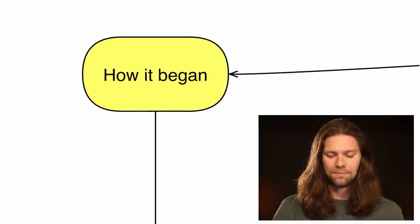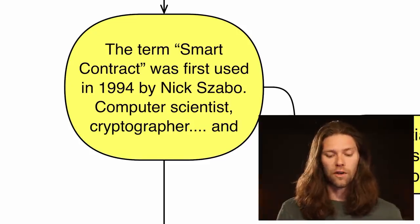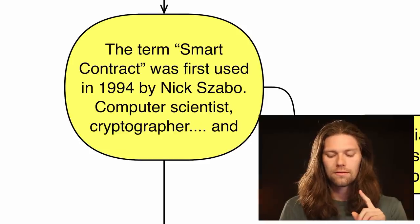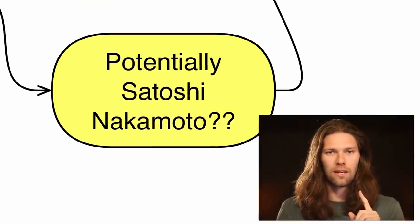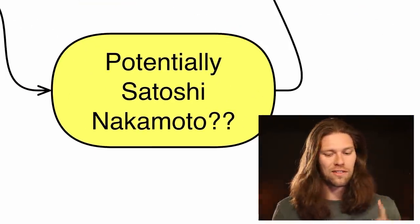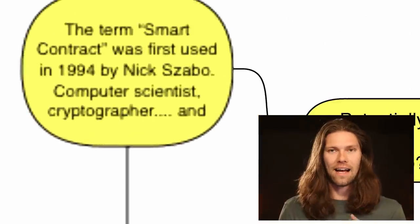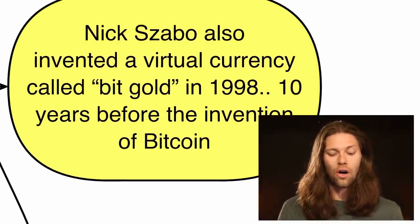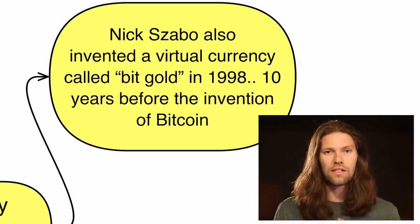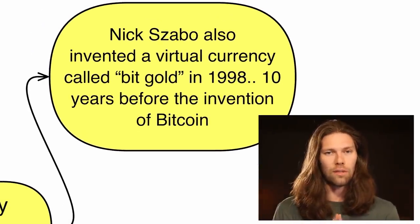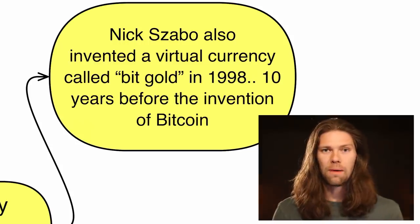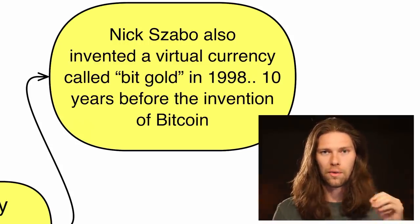How it began: the term smart contract was first used in 1994 by Nick Szabo, who was a computer scientist and a cryptographer, and potentially Satoshi Nakamoto. There are some rumors that Nick is actually Satoshi Nakamoto because Nick also invented a virtual currency called BitGold in 1998, ten years before Bitcoin was invented.